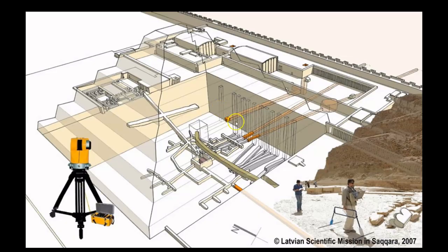Here in this diagram, I wanted to present what is the most exceptional 3D representation of the Step Pyramid Complex. It shows the southern displacement shaft that leads from the primary digestion chamber out towards the south. This diagram was produced by the Latvian scientific mission in Saqqara in 2007 - they did LIDAR scanning of the entire area and discovered this displacement shaft. Just something to keep in mind regarding all of the Egyptian pyramids: just because something is not listed on an old diagram, it does not mean it doesn't exist. New discoveries are being made with new technology at these locations every single day.